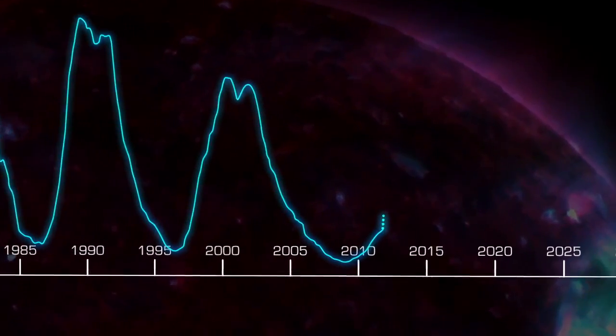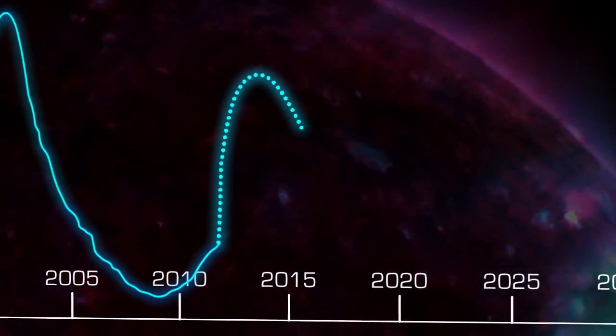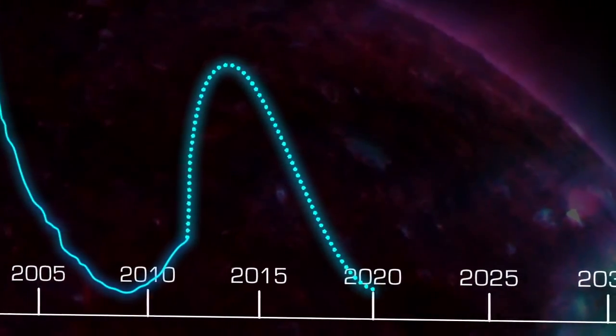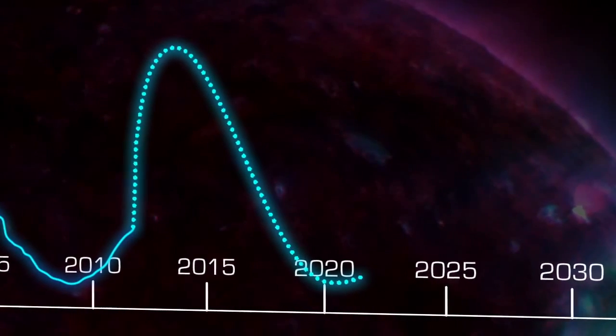Right now, the Sun is approaching solar maximum, so flares and CMEs are more common than they were a few years ago. This cycle may peak in 2013 or early 2014, and should reach its minimum around 2020, although predictions about the Sun are still uncertain.